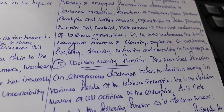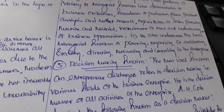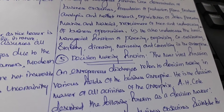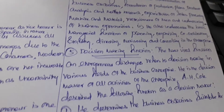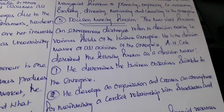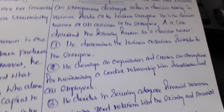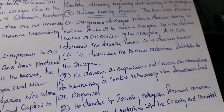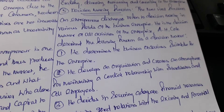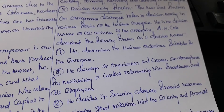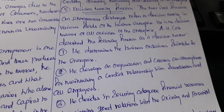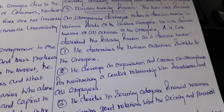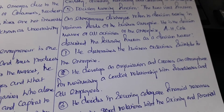The entrepreneur also undertakes the basic managerial functions of planning, organizing, coordinating, staffing, directing, motivating and controlling in the enterprise. The last function is decision making. The most vital function an entrepreneur discharges refers to decision making in various fields of the business enterprise. He is the decision maker of all activities of the enterprise, deciding how to perform all activities in the organization.